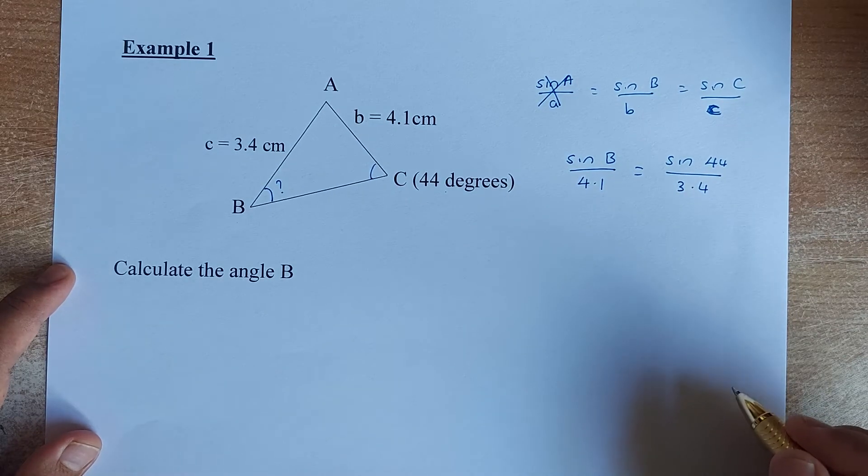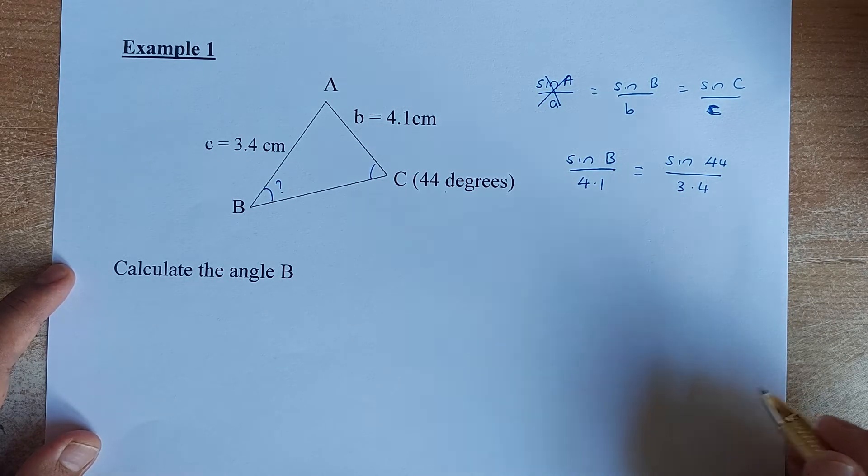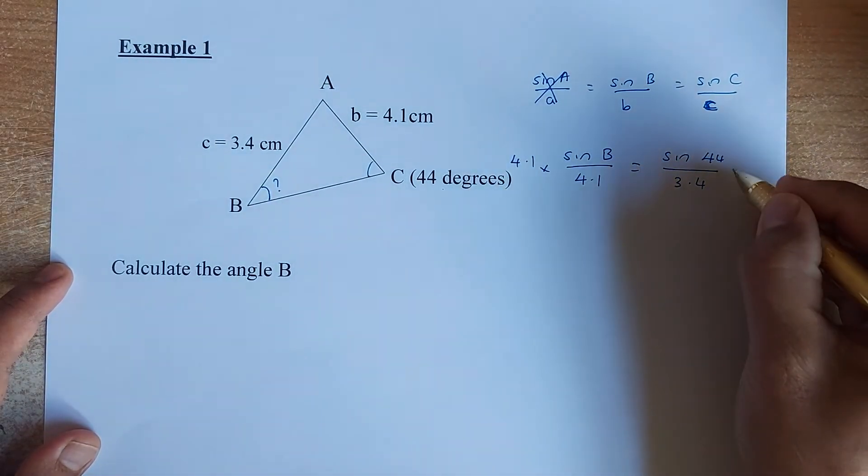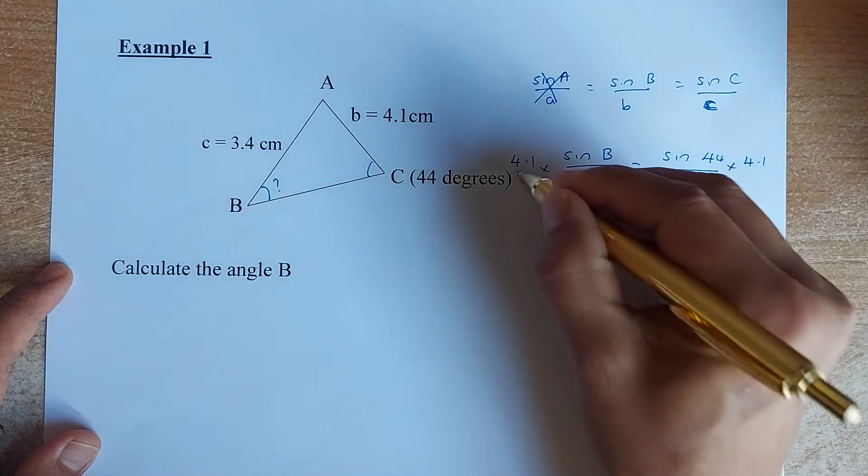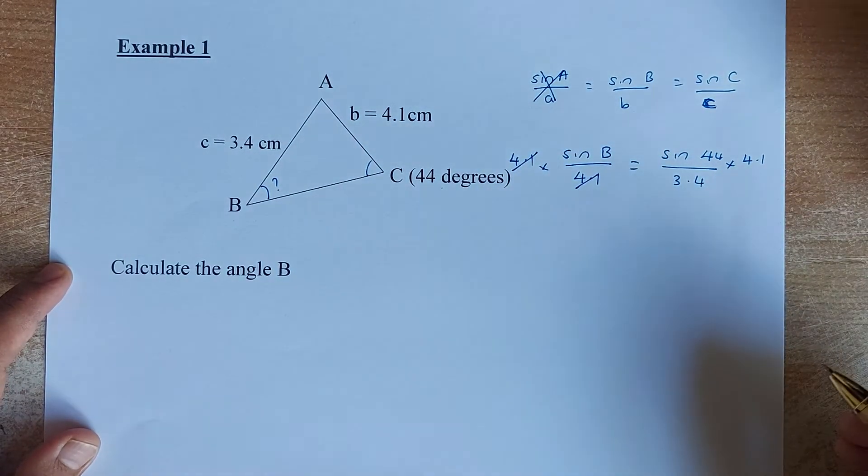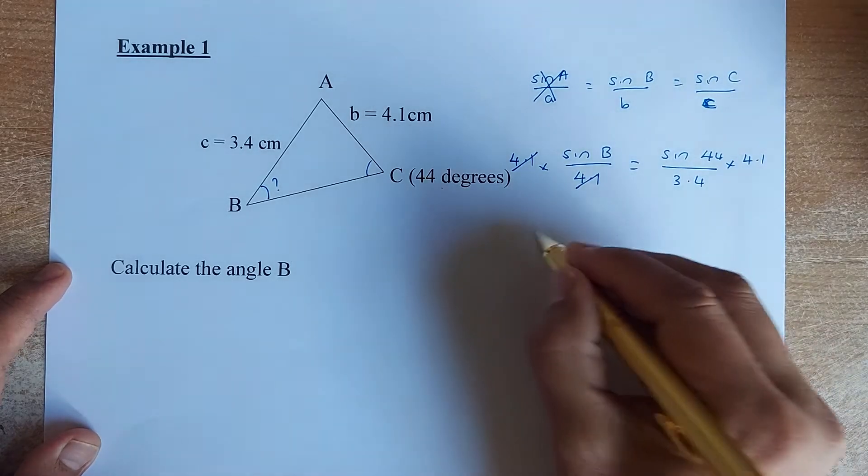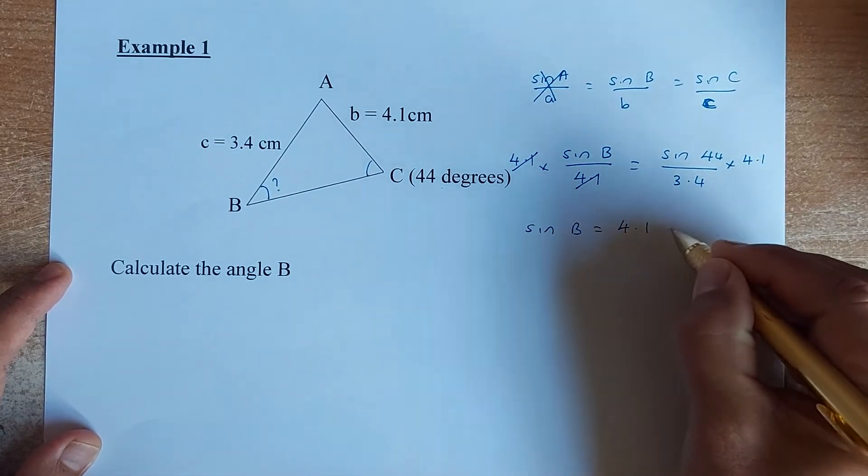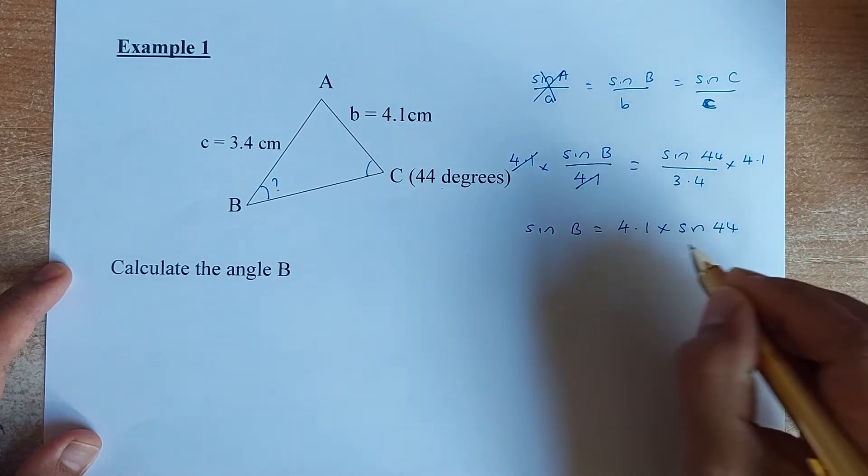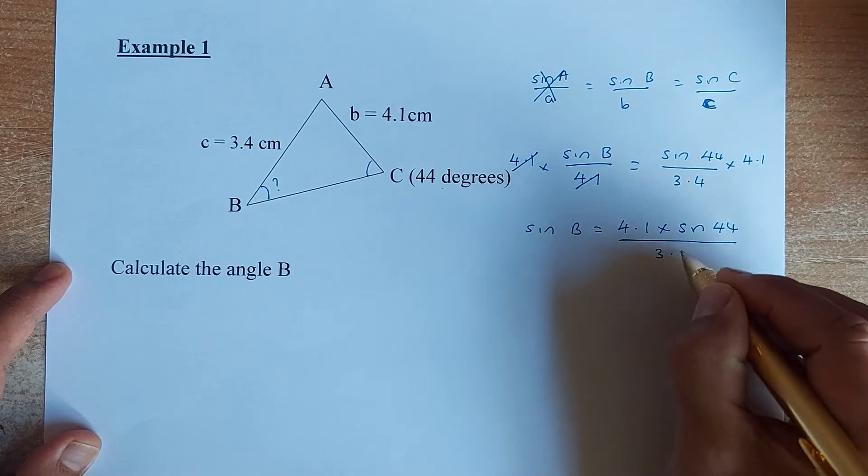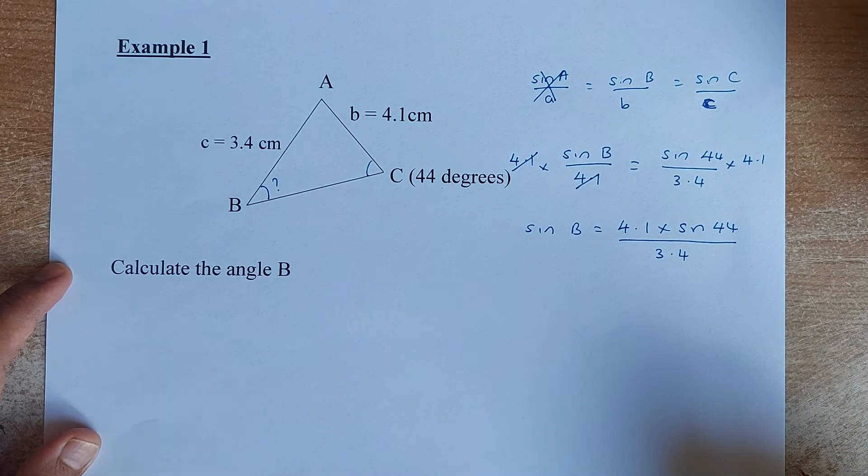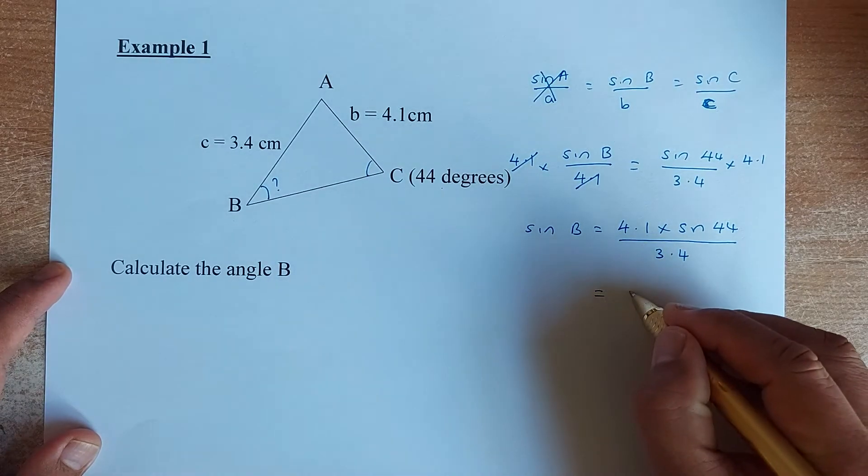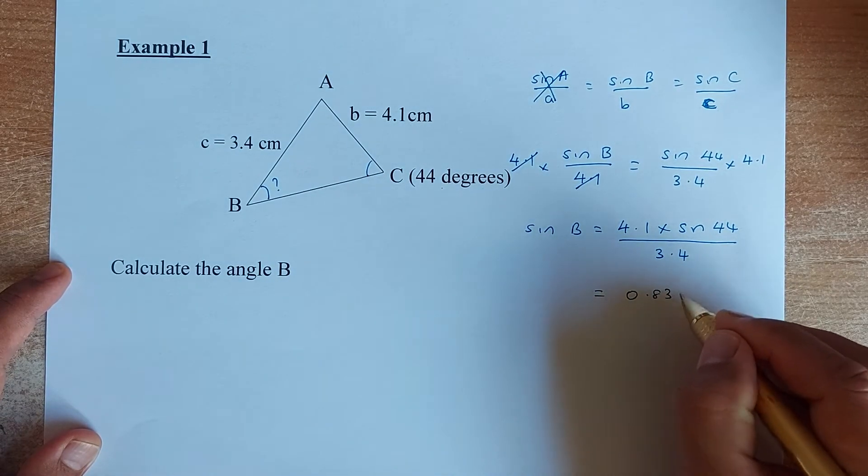Now what you do, the next thing, you use algebra, you are going to solve for B. So you get rid of the 4.1, you multiply 4.1 on the left, you multiply 4.1. The 4.1 divided by 4.1 becomes 1, so they will cancel out. So sine B is now equal to 4.1 multiplied by sine 44 divided by 3.4. Now it's time for you to put in your calculator. I've done it before. The answer is 0.8377.